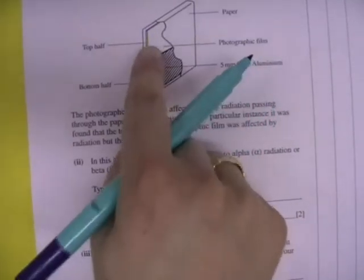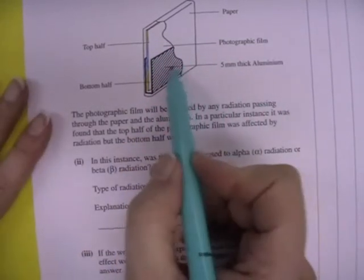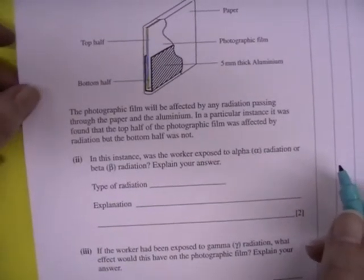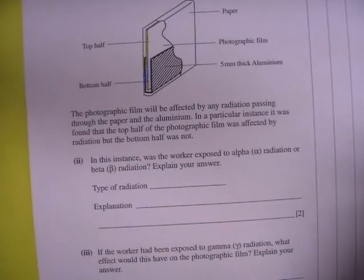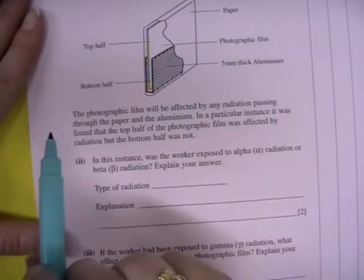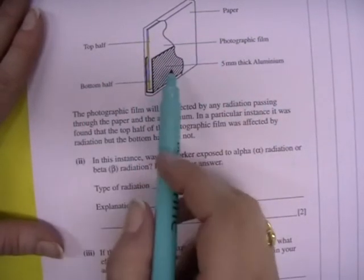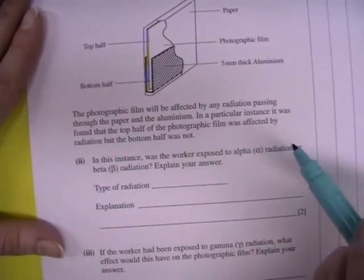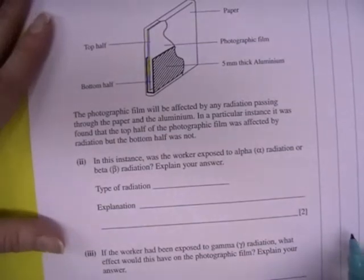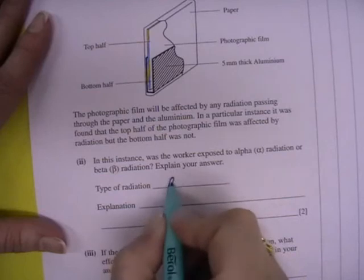Well now we have to look at the top half. This means that the form of radiation passed through the paper but didn't pass through the aluminum. The penetration values for alpha, beta and gamma radiation vary. Alpha will not penetrate through paper. Beta will penetrate through the paper but it won't penetrate through that thickness of aluminum and gamma will penetrate through paper and aluminum. So in this instance, the worker was exposed to beta radiation.